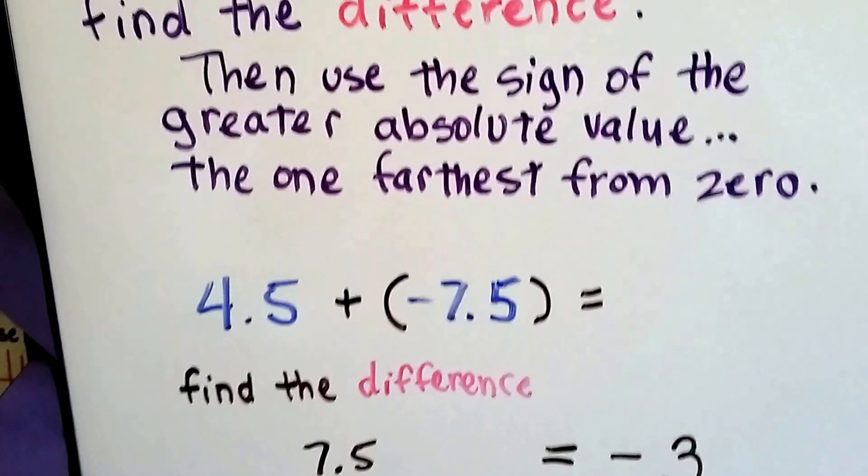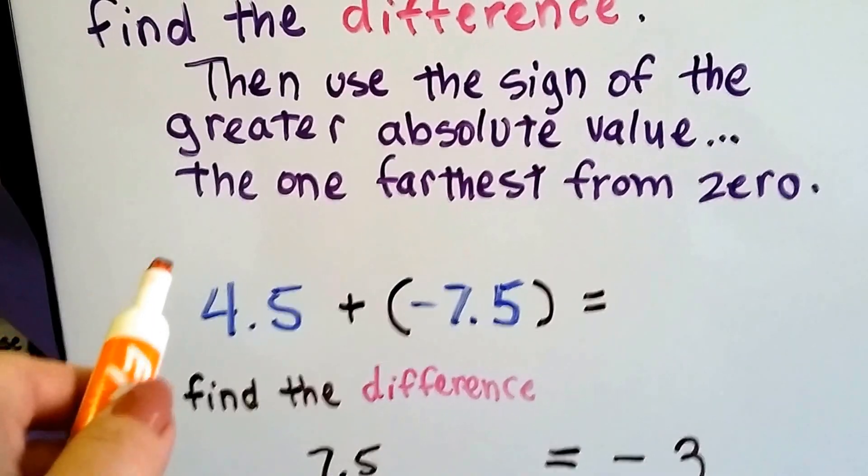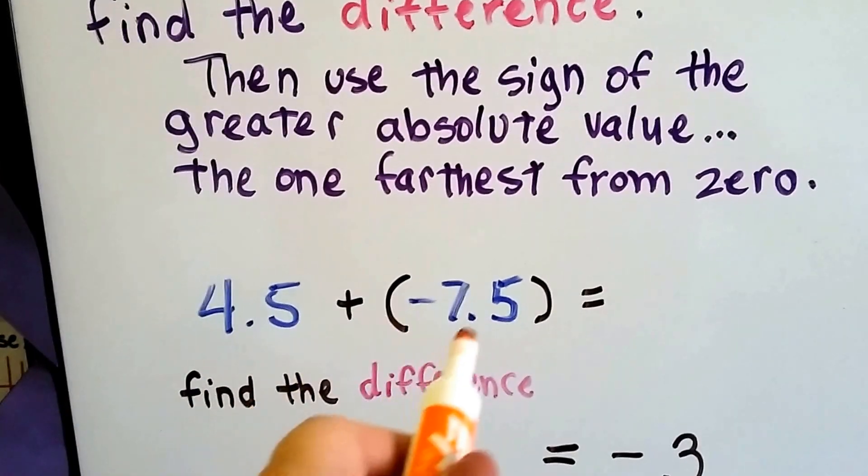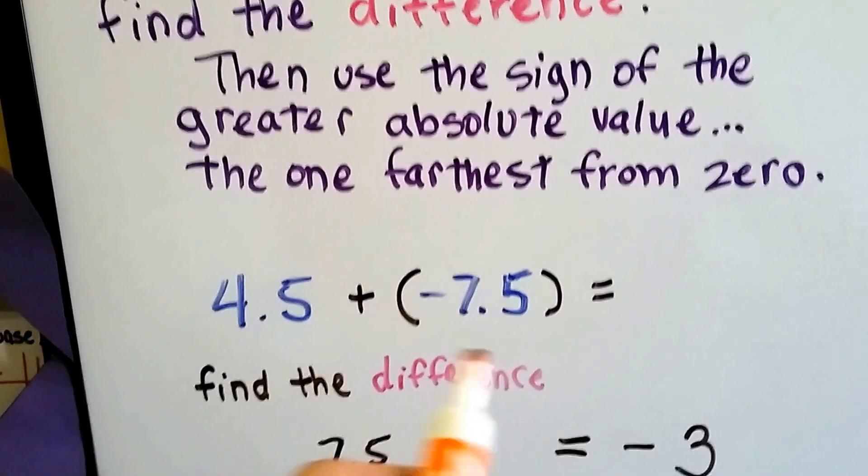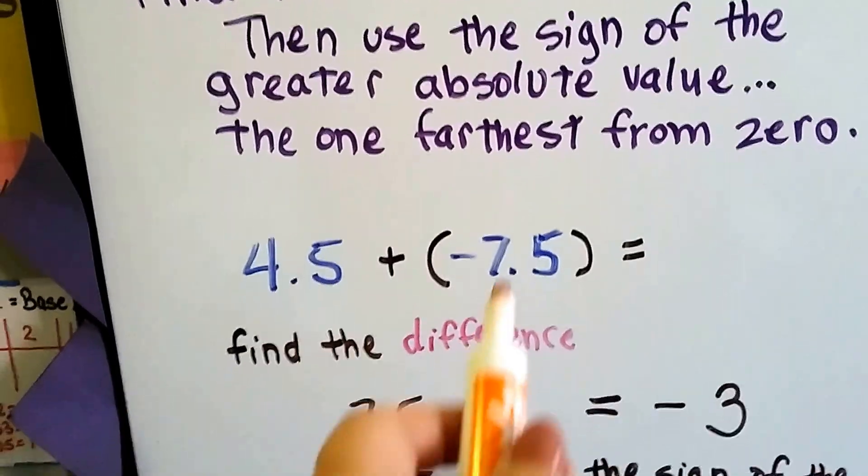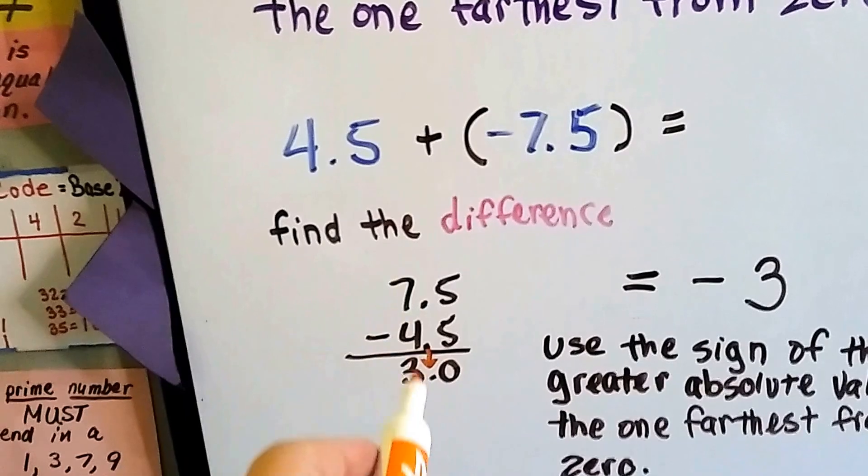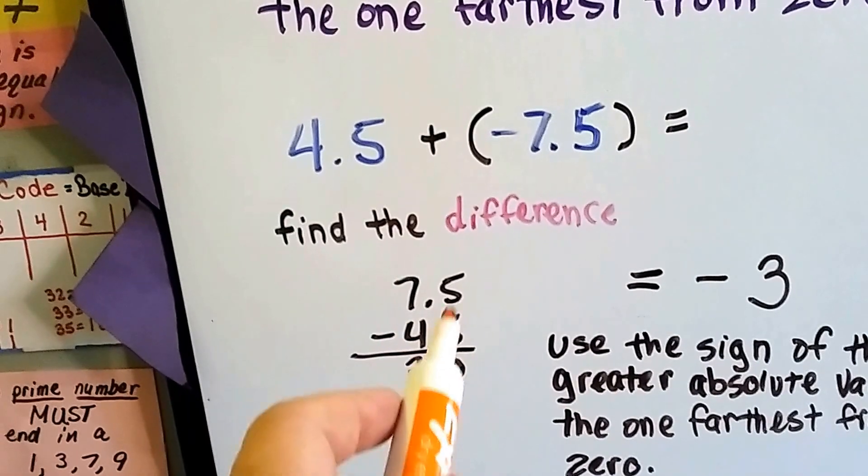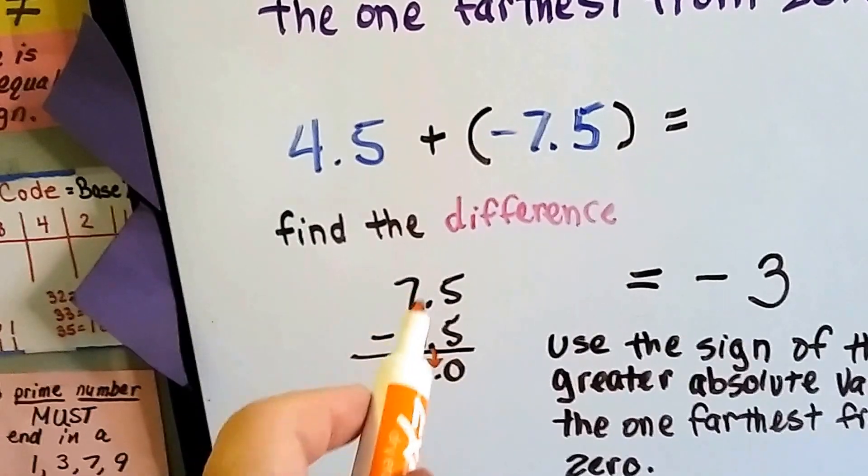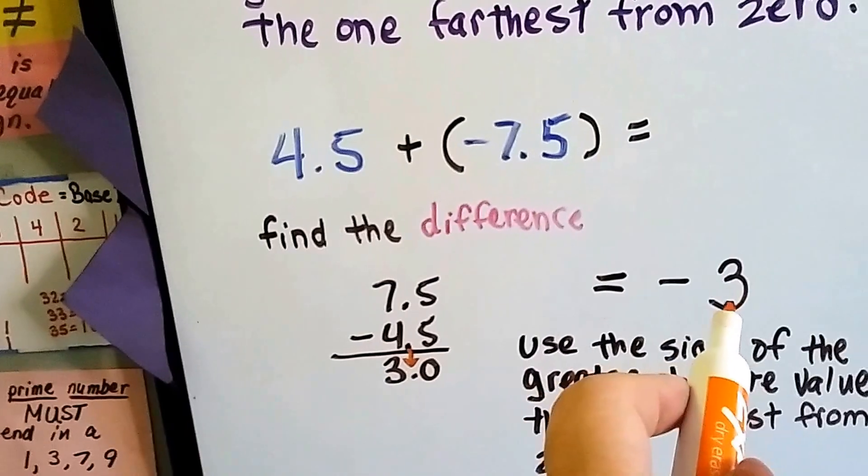So here's two rational numbers in decimal form, positive 4.5 plus negative 7.5. We need to find the difference, so we're going to take the smaller one away from the larger one. We make sure we line up our decimals, so they can drop straight down, and 5 take away 5 is 0, and 7 take away 4 is 3. Our answer is 3.